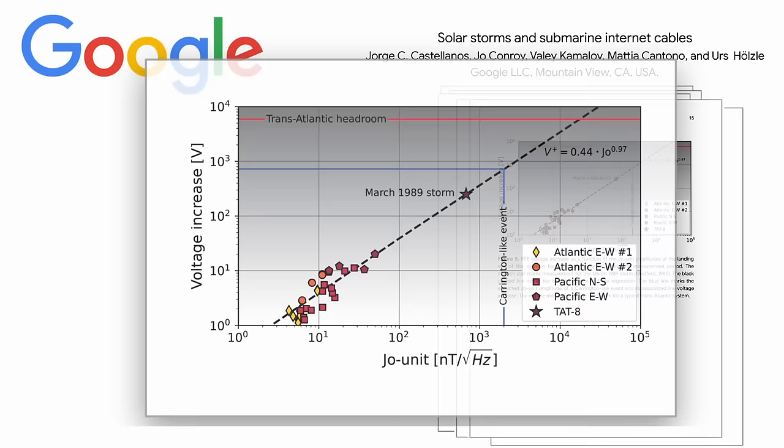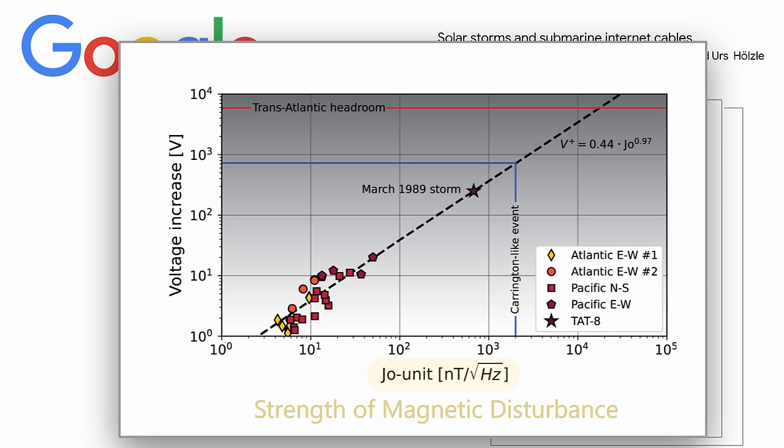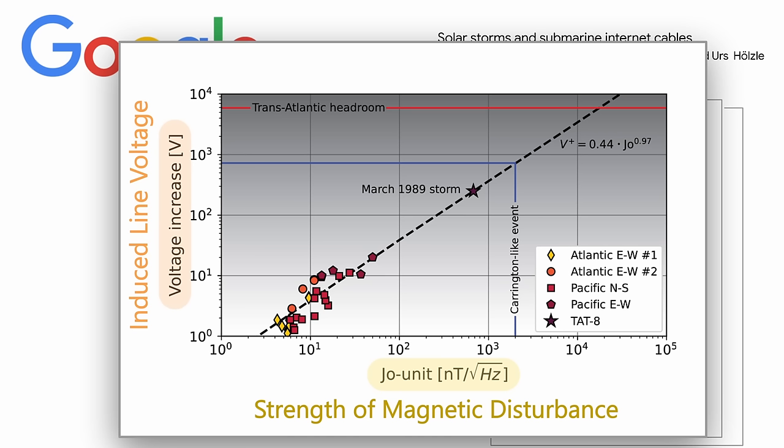The study then correlates any induced voltages on the lines with the strength of the magnetic field disturbance caused by the event. On their plot, the horizontal axis is essentially the strength of the magnetic field disturbance caused by the solar event, and the vertical axis is the strength of the induced voltage as measured on the cables. The data surveyed in their study falls in the lower left of the plot, and they have one data point from the only existing fiber line in operation during the 1989 solar storm, which induced a line voltage of 300 volts.